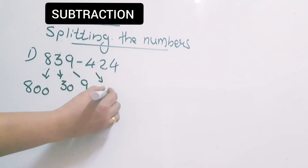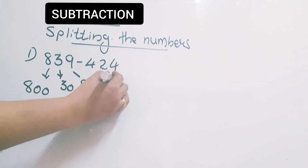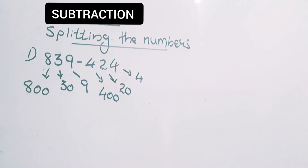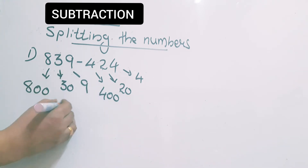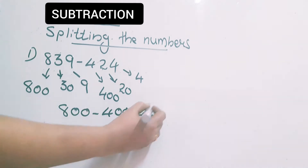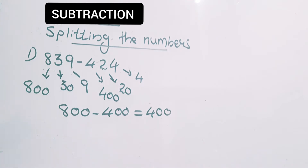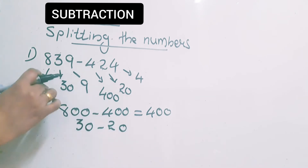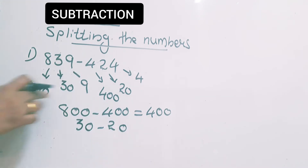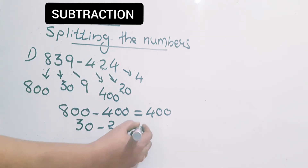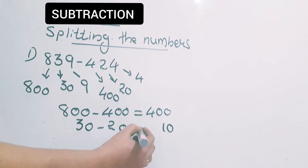Here 4 has place value 400, here 2 has place value 20, and here 4 has place value 4 only. Splitting is done. Next we have to do minus — hundreds minus hundreds. That is 800 minus 400. We know 8 minus 4 is 4, so here we get 400. Next is 30 minus 20, tens minus tens. 30 minus 20 is equal to 10. Write it in the correct place.